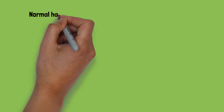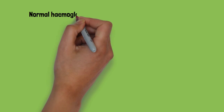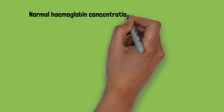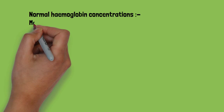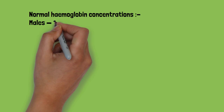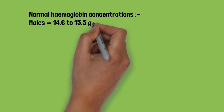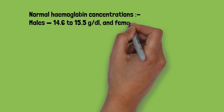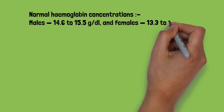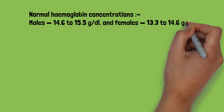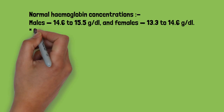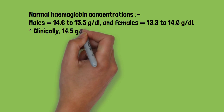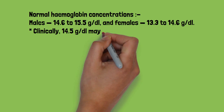Adult male contains 14.6 to 15.5 gram per dl hemoglobin, and adult female contains 13.3 to 14.6 gram per dl. Clinically, 14.5 gram per dl may be taken as 100%.